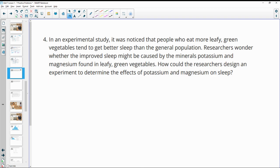Number four, in an experimental study, it was noticed that people who eat more leafy green vegetables tend to get better sleep than the general population. Researchers wonder whether the improved sleep might be caused by the minerals potassium and magnesium found in leafy green vegetables. So how could the researcher design an experiment to determine the effects of potassium and magnesium on sleep? So they could randomly select a certain number of participants.